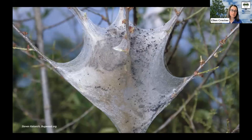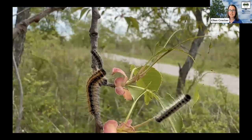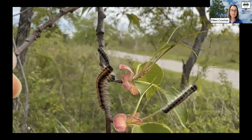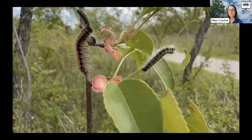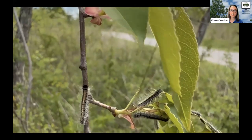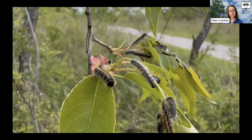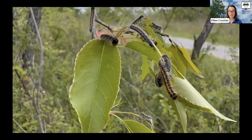Eventually those caterpillars will form cocoons that develop into adult moths, and the cycle continues. The caterpillars eat the leaves of trees, and in some cases they can completely defoliate those trees. While this looks bad, trees are typically fine and will put out a new flush of leaves and recover without problems.